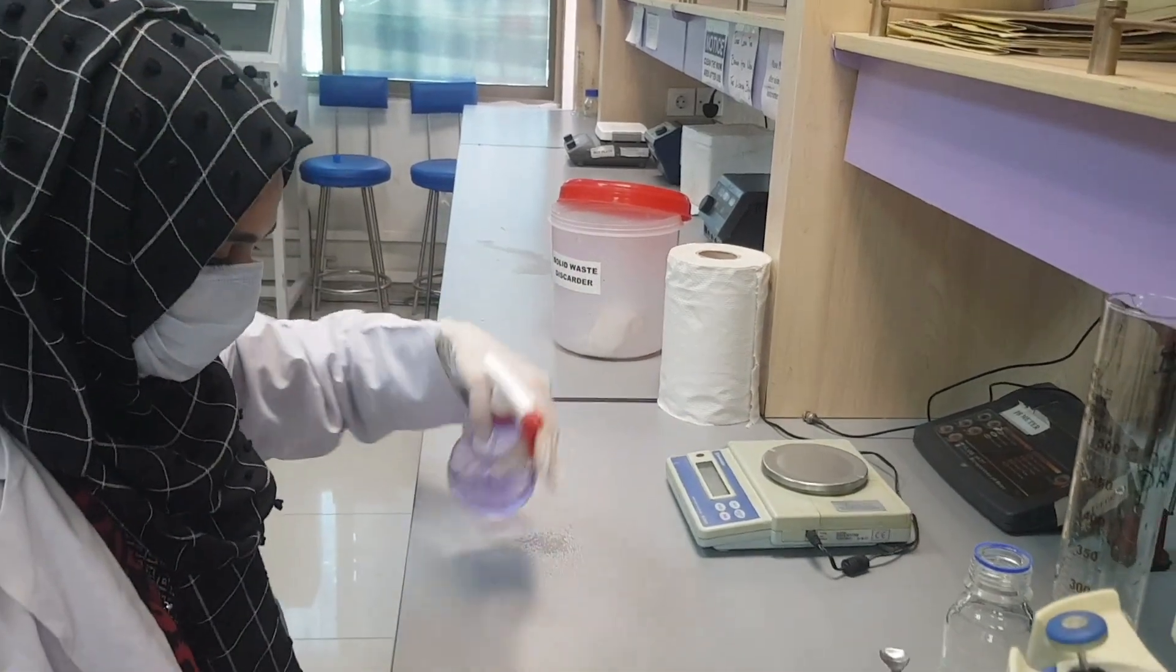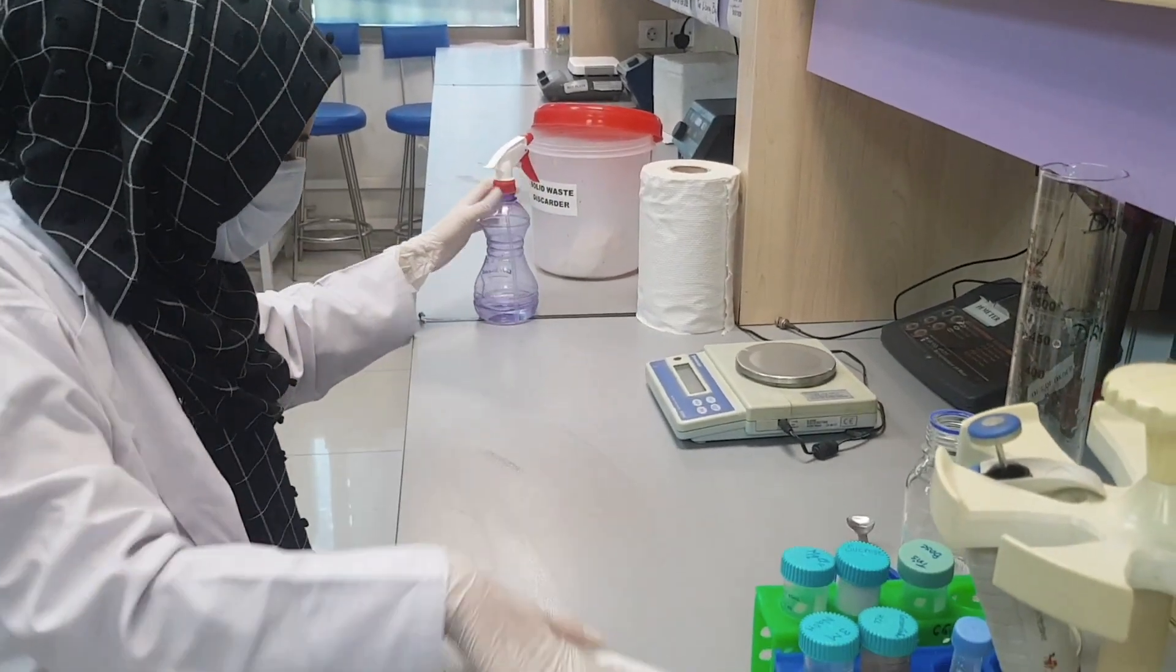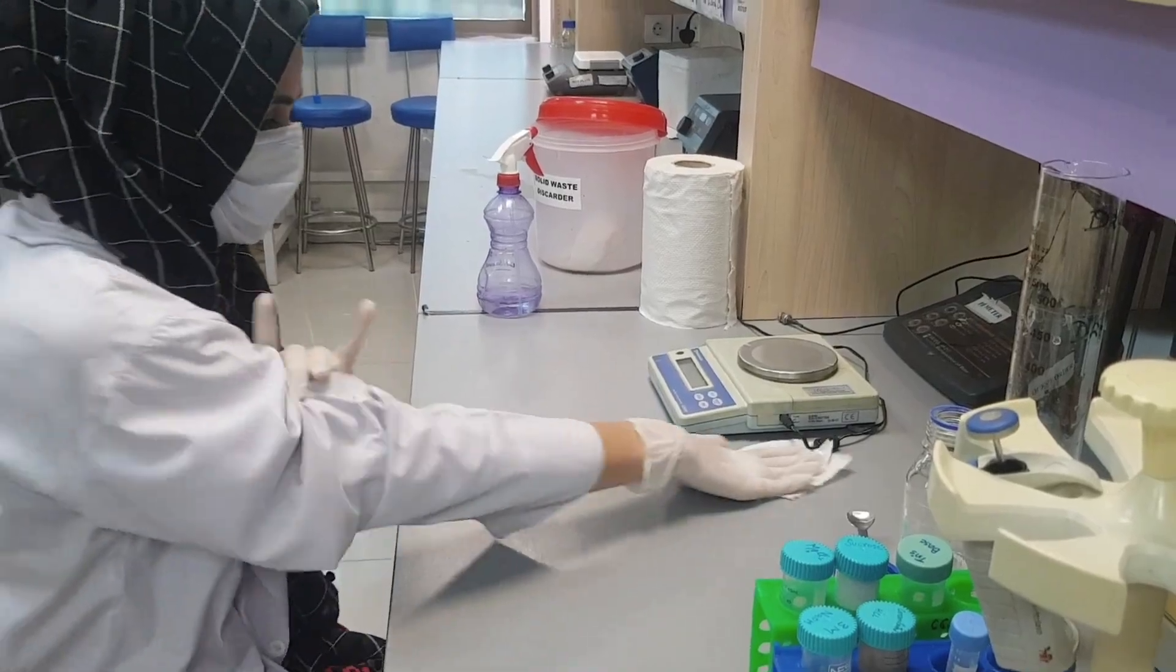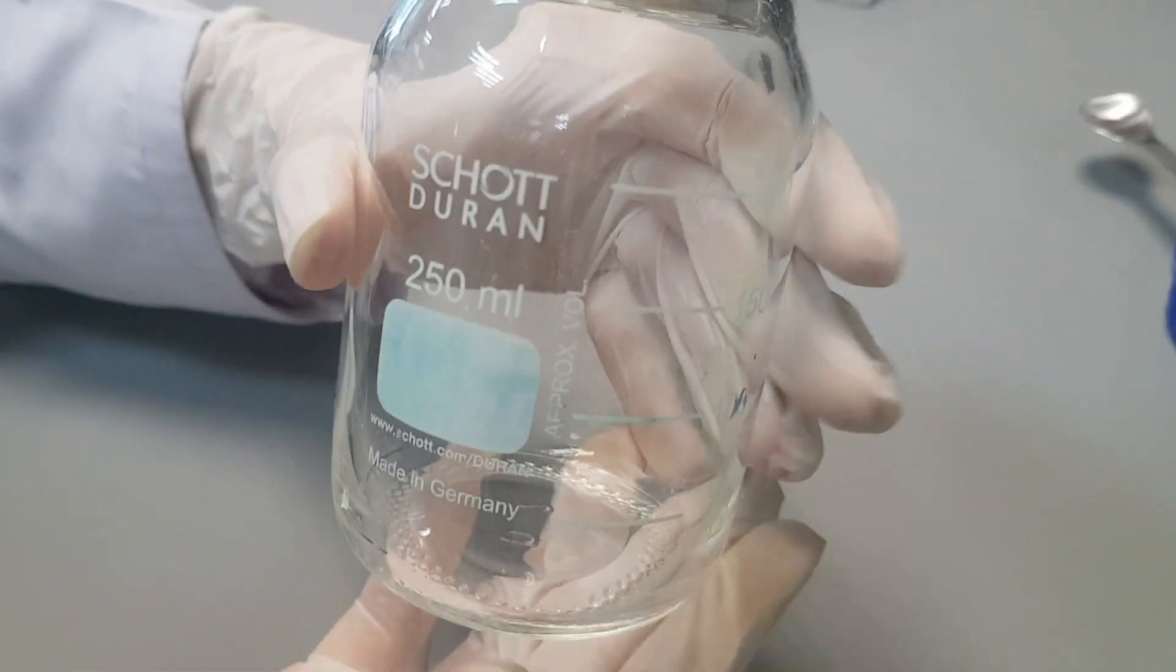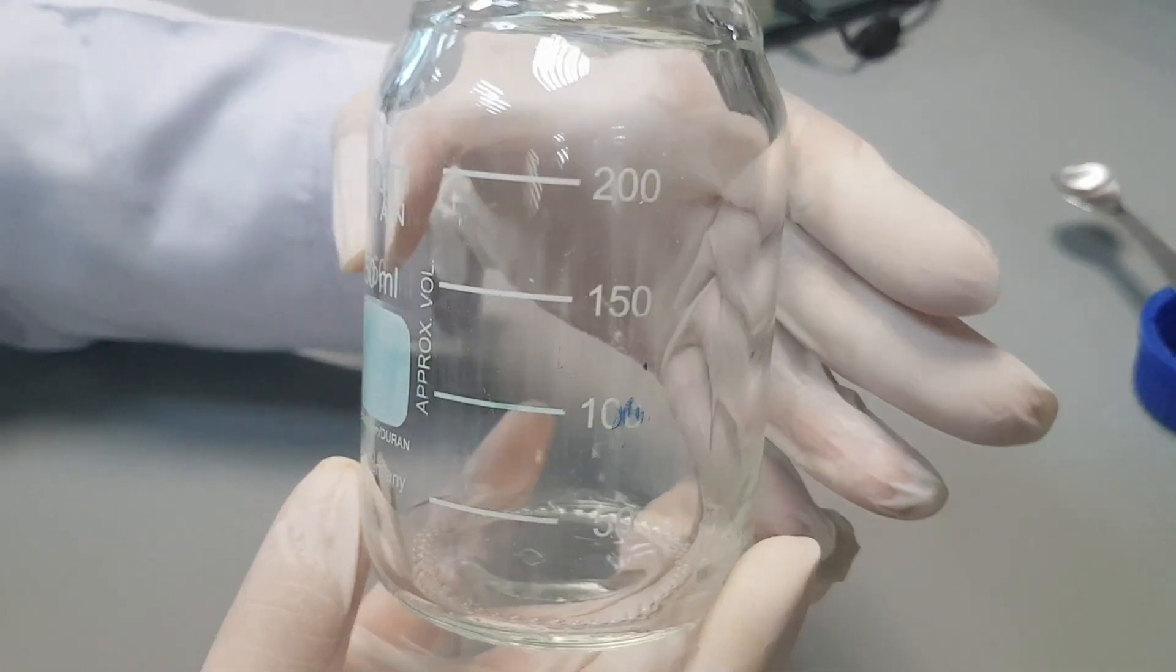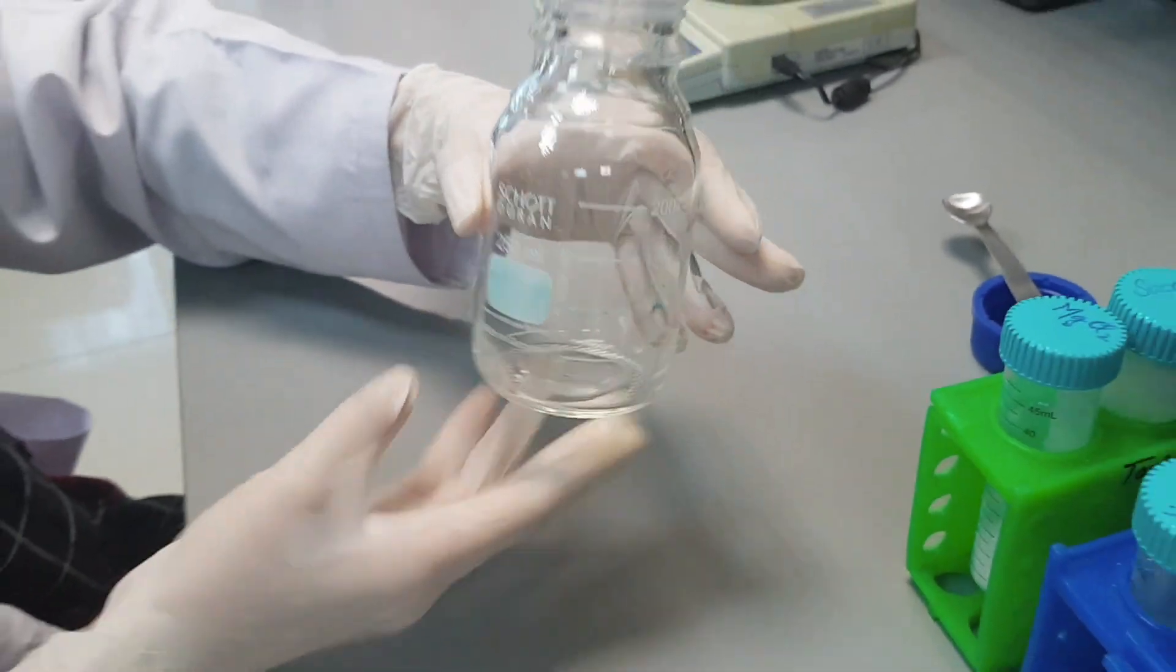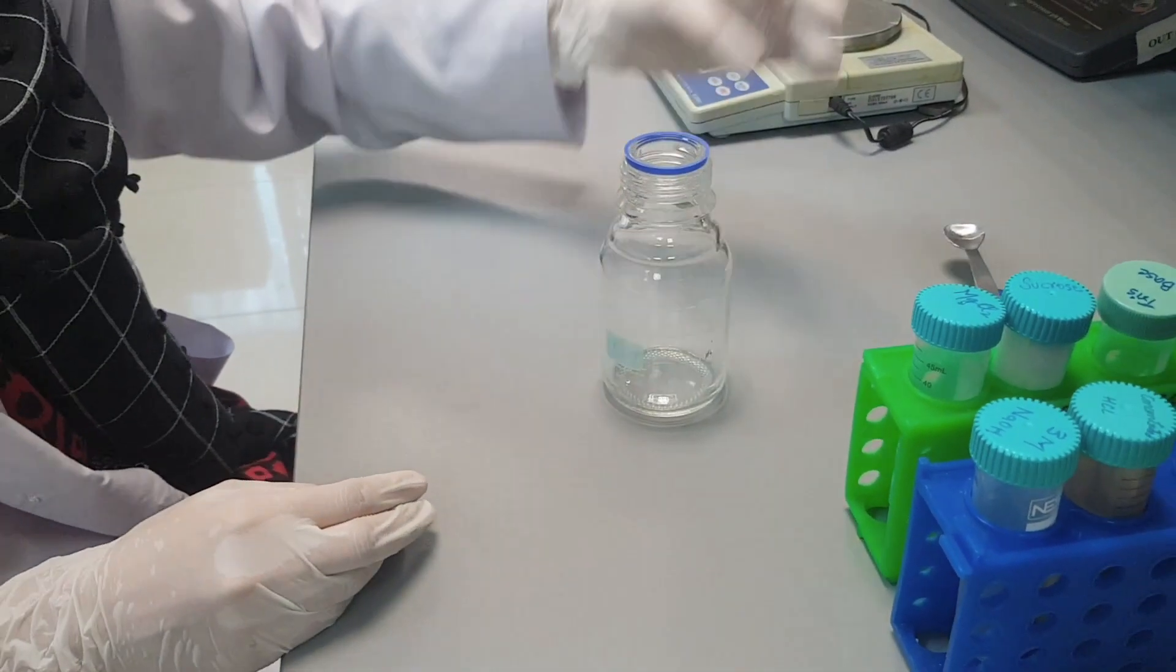First of all, clean the working bench with ethanol. Take a reagent water for preparing 250 ml of solution A. Put 100 ml of distilled water in a 250 ml reagent bottle.